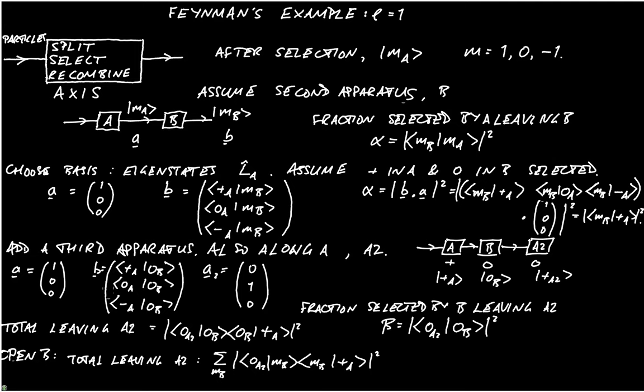But we know that the sum over a complete set of eigenstates is just the identity operator. We've done that before in class. So that's going to equal the square modulus of zero A2 plus A, which is zero.